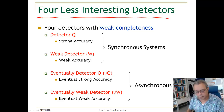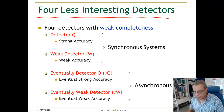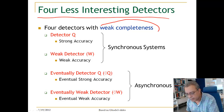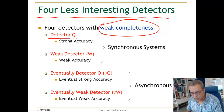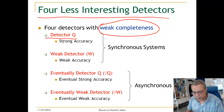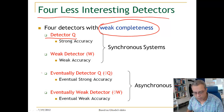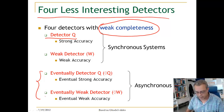There are four less interesting failure detectors that we will use later to define a hierarchy of failure detectors. These are coupled with weak completeness: detector Q uses strong accuracy, detector W uses weak accuracy, and two other eventually-type failure detectors.